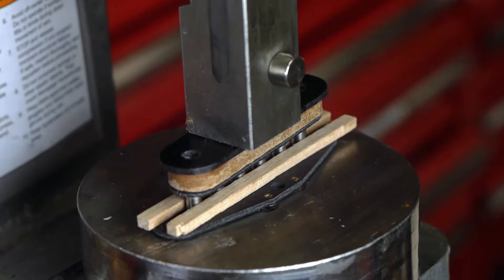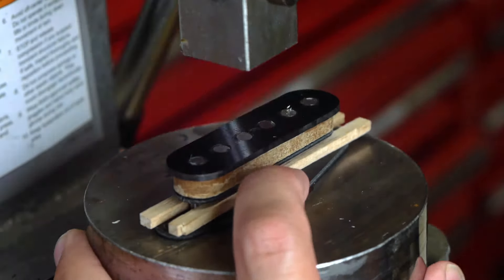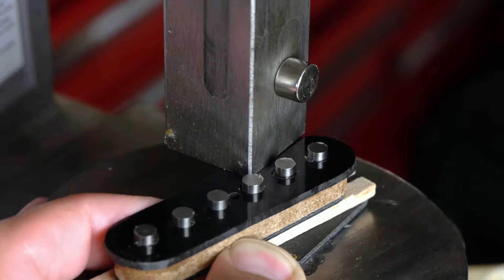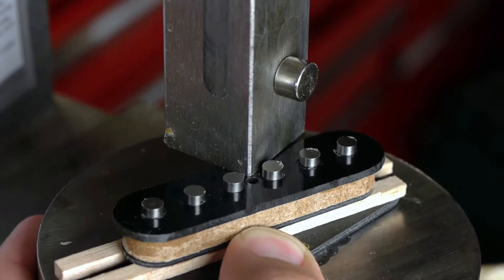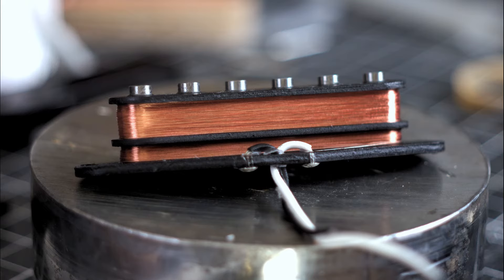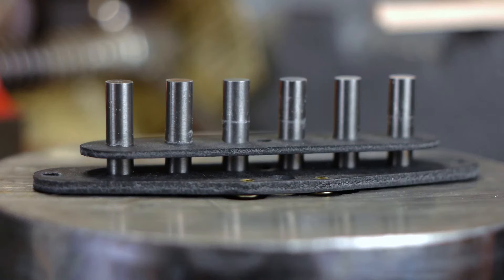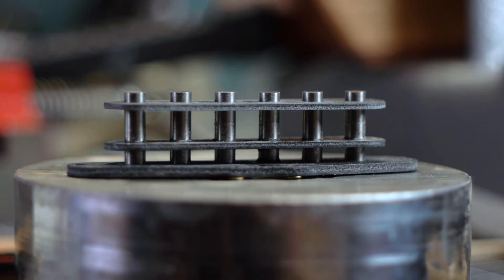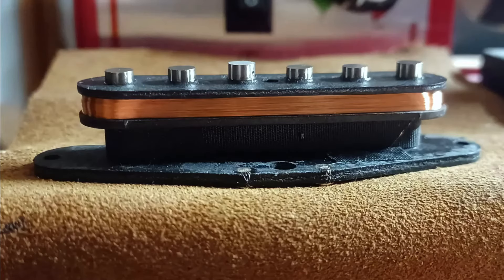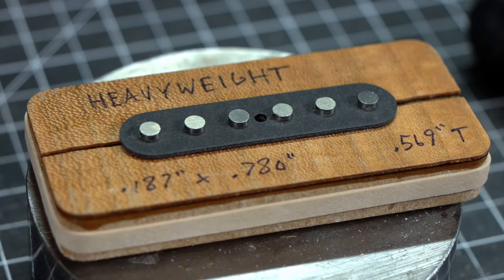Using the arbor press is particularly helpful when pressing the top flatwork piece very far down, like on a noiseless stacked pickup where the middle flatwork piece acts as a divider between the top and bottom coils, or when making Bill Lawrence micro coil style single coils where the middle flatwork piece merely acts as a spacer so you can have a very short coil with the same mounting height as a normal, taller coil. Whichever method you use, once the top flatwork is fully seated, it's time to move on to the next step.